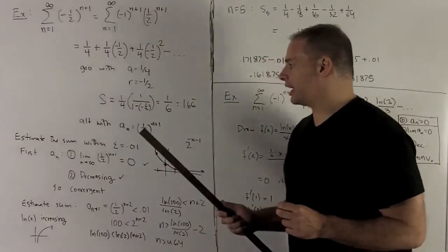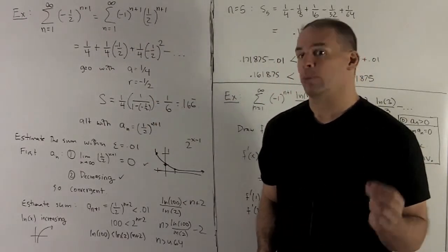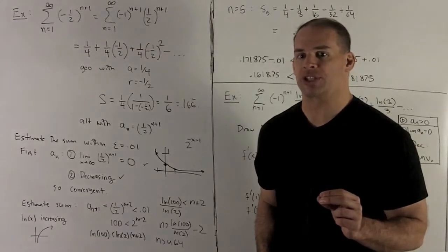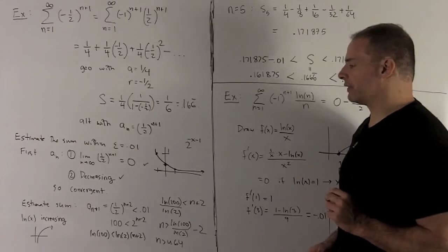So this series definitely converges by alternation. We already saw that it converged by the geometric series test, though. Anyway, two ways to see convergence.